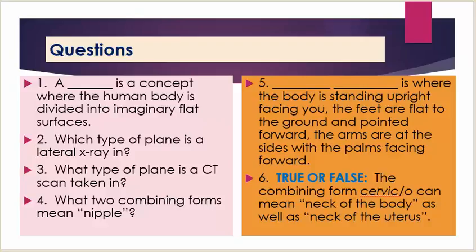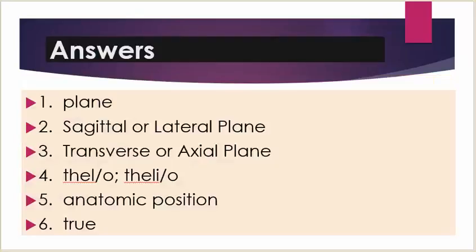Number six: true or false — the combining form cervical can mean neck of the body as well as neck of the uterus. Answers. Number one: plane. Number two: sagittal or lateral plane. Number three: transverse or axial plane. Number four: thelo or thelio. Number five: anatomic position. Number six: true.